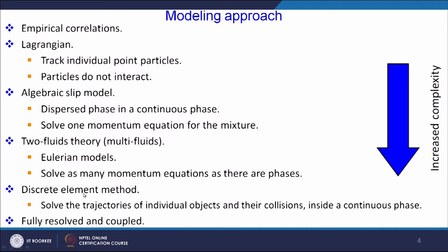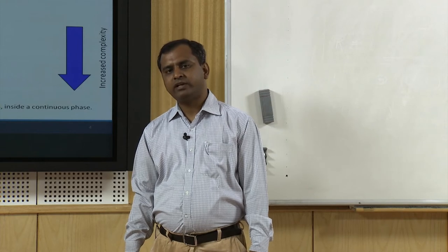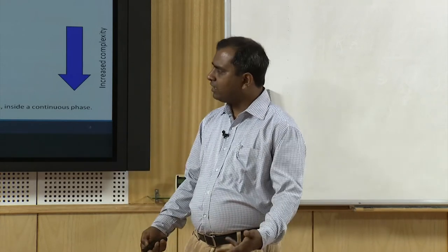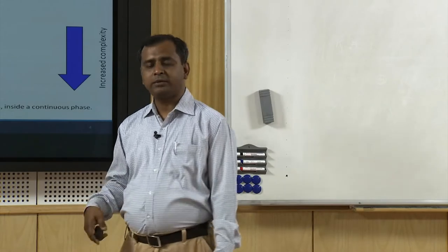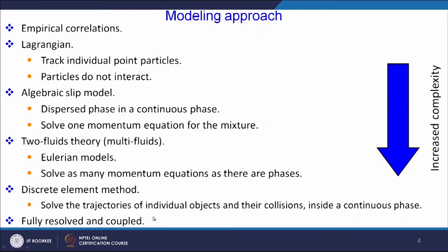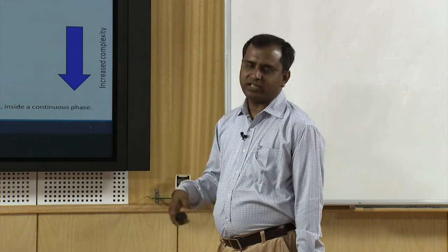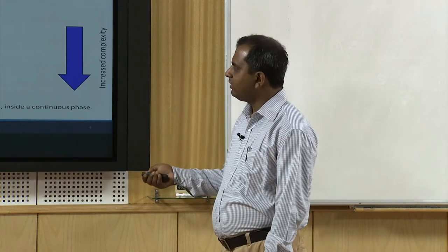Then came the idea of discrete element method, which solves the trajectory of individual objects and finds out their collisions inside the continuous phase. This type of methodology is very well resolved in scale — complexity increases whenever you resolve at lower scales. Finally, we can go for fully resolved and coupled simulation, which is towards your direct numerical simulation or large eddy simulations. Complexity-wise, empirical relations are very easy and less complex, while fully resolved ones are very complex.